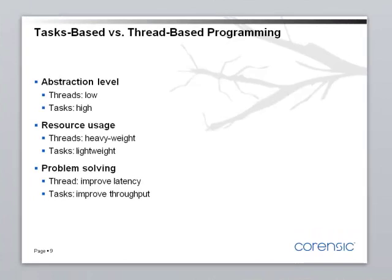Here's a general comparison of task-based and thread-based programming. At the abstraction level, threads are low-level: the programmer is responsible for creating threads, passing special arguments, joining, and so on. Tasks are higher level because the system takes care of many details. As far as resources go, threads are usually heavyweight — implemented as OS threads requiring a kernel call, stack allocation, and kernel data structures. Tearing down a thread is also expensive.